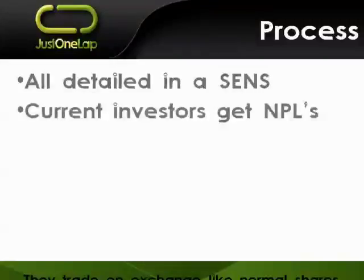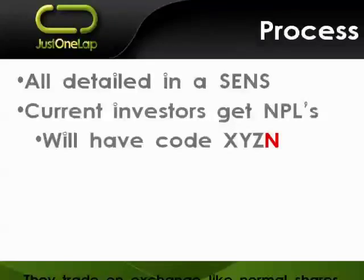Current investors will get the nil paid letters. You identify them by the code XYZ — the normal company code — with an N appended. So if SAB were to issue nil paid letters, they would be SABN. They trade on the JSE as a normal instrument. They do have a finite lifespan, but you would buy and sell them via a normal broker and they would arrive in your brokerage account. Keep an eye on SENS so you know when they're coming, and when they arrive you know what you want to do with them.